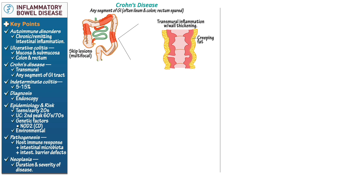Indicate the creeping fat that wraps around the GI tract. Inside the segment, show different types of lesions: aphthous erosions, these early signs of Crohn's disease, are shallow, whitish or opaque sores in the mucous membrane. Longitudinal — also known as rake or bear-claw ulcers — look as if someone dragged a rake down the lining of the GI tract. Eventually, the lining of the GI tract can take on a cobblestone appearance, as tissues become so crowded with ulcers that it resembles a cobblestone sidewalk.